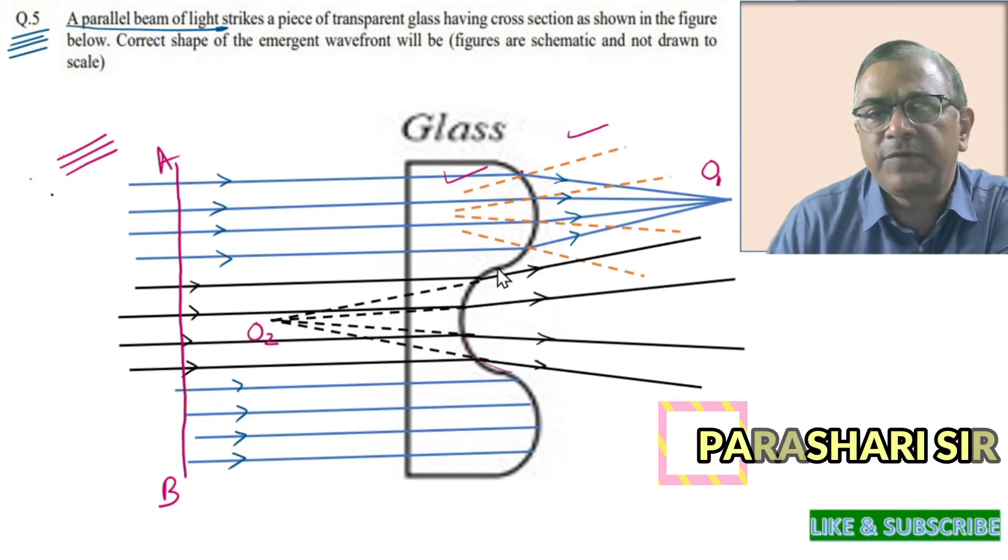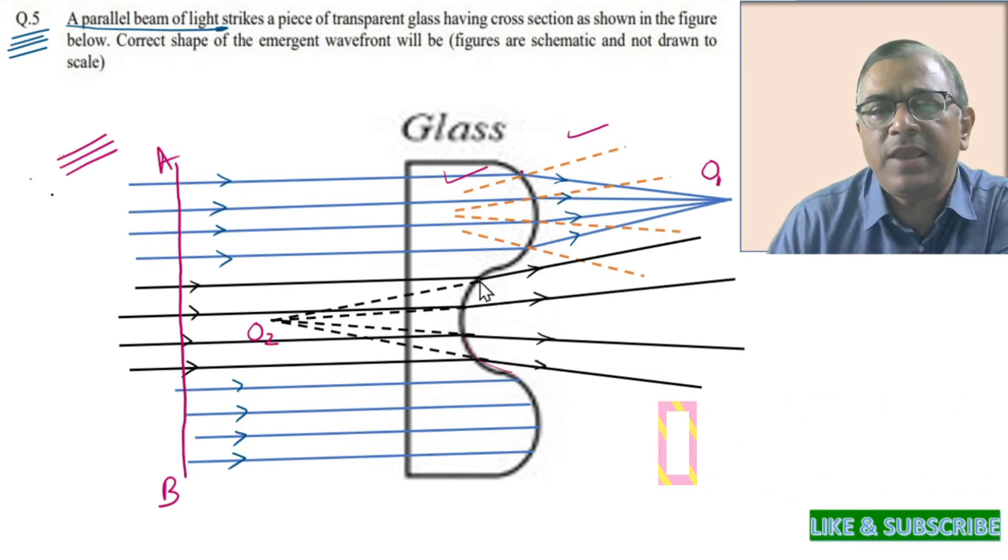Similarly, from this curved portion of the glass slab, the rays are refracted and appear to come from O2.